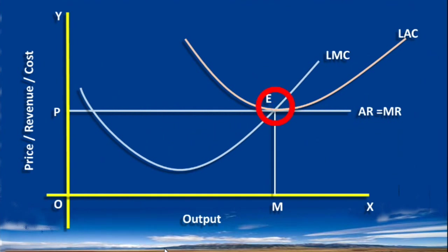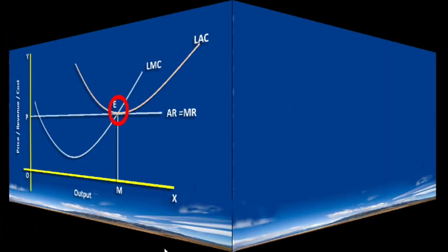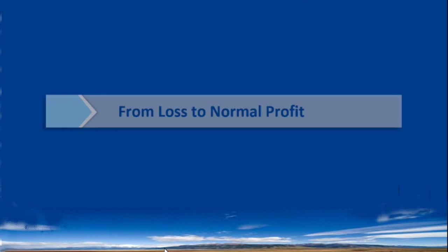You must understand that in the long run, when a competitive firm is in equilibrium, it will earn only normal profit. We shall observe the course of long run equilibrium here.